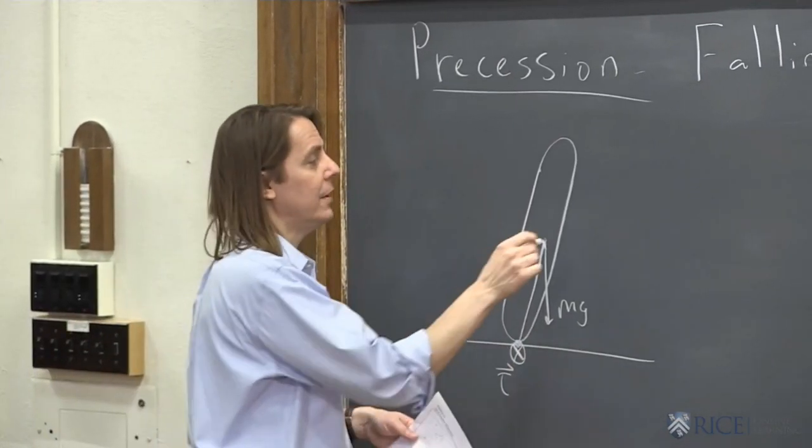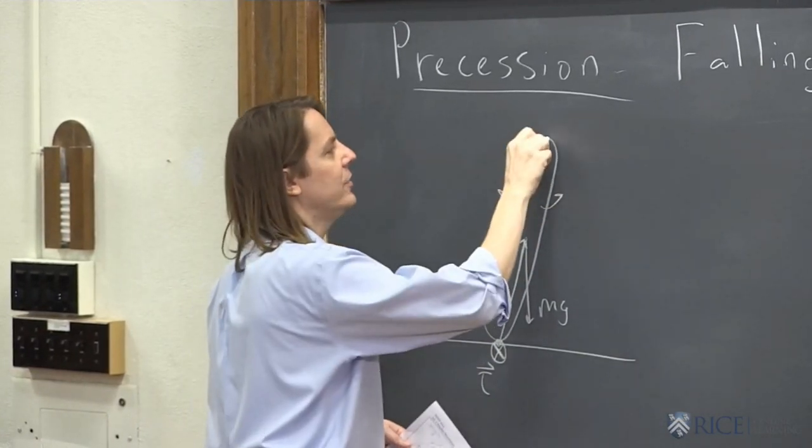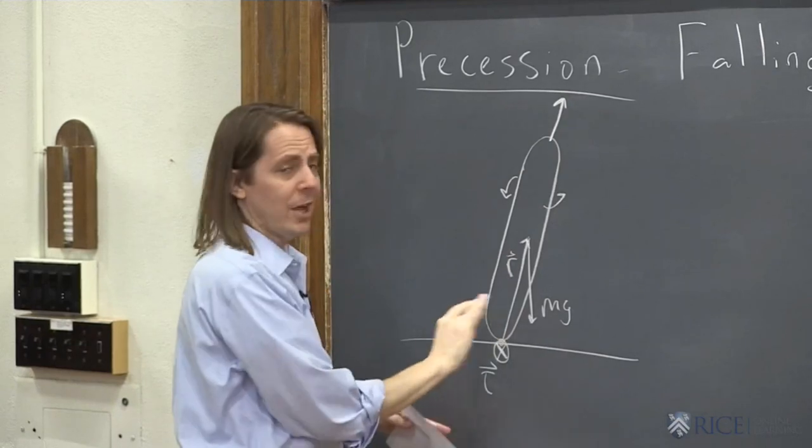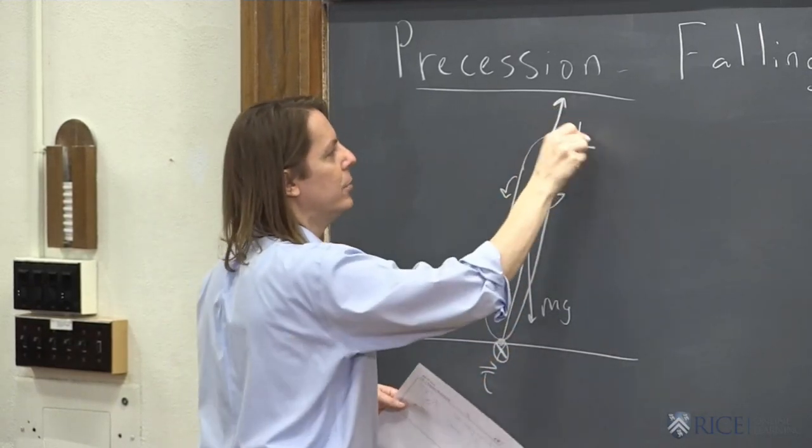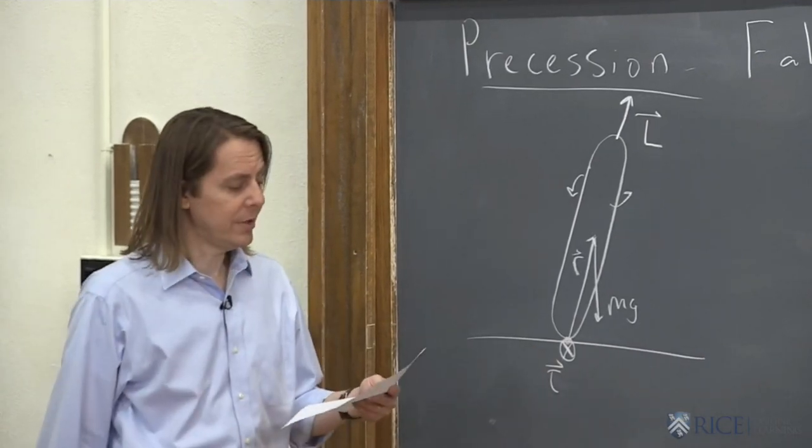The difference is now it's spinning. Now it's going around this way, coming around that way. So it has its own, independent of what's happening down here with gravity, it has its own angular momentum in addition to what's going to be created by gravity.